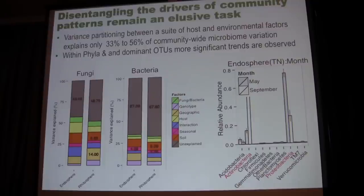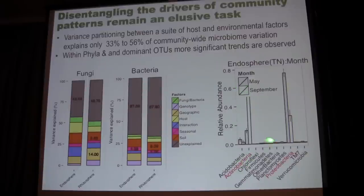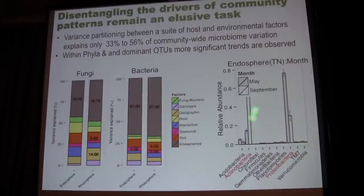For example, within the endosphere — and this has been shown in Dangle's group and others — the actinobacteria and the proteobacteria seem to be very important groups, and specifically Streptomyces-like organisms and Pseudomonas-like organisms tend to dominate in root samples. We could see a very significant shift from Streptomyces-like actinobacteria being dominant in the fall to Pseudomonas-like proteobacteria being dominant in the spring in these systems.